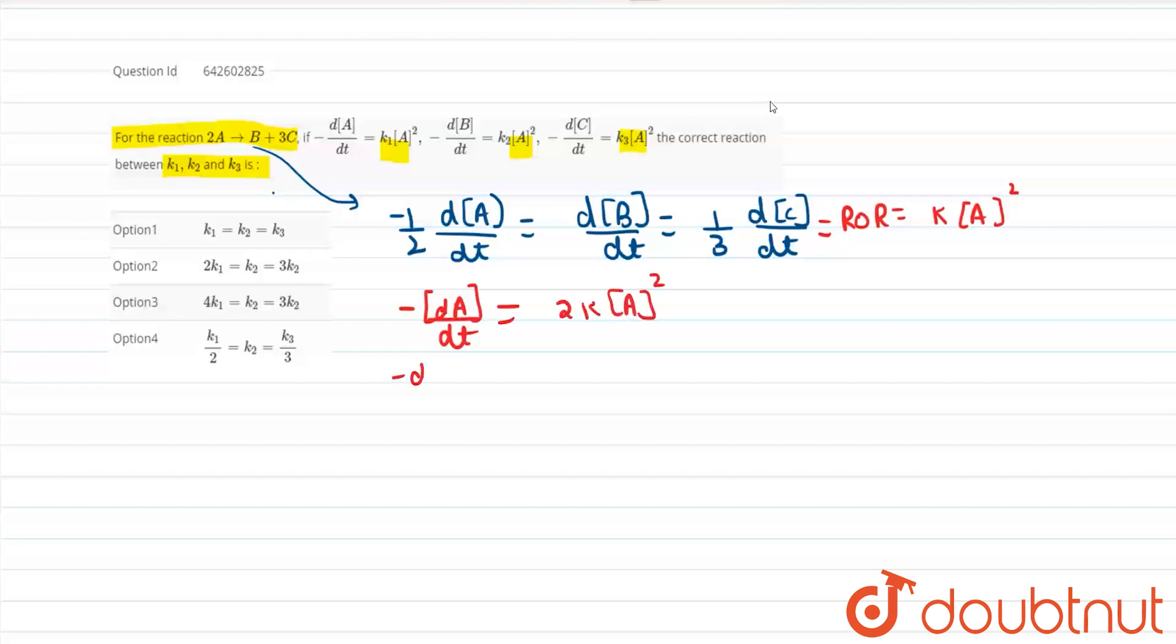And minus dB/dt, minus dB/dt will be equals to, it will be equals to k into A².